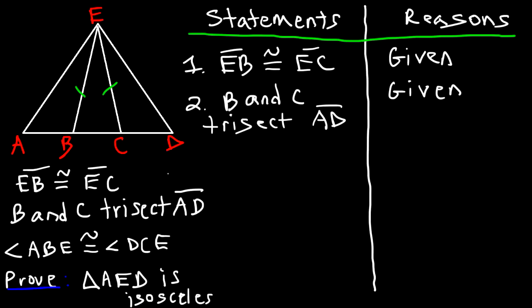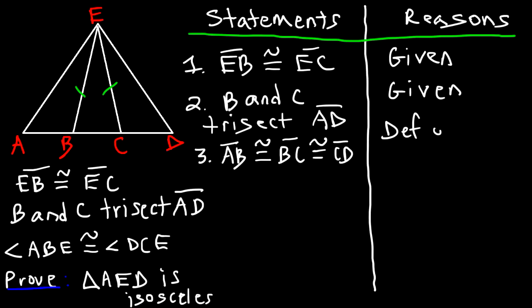If points B and C trisect segment AD, what does that mean? A segment bisector splits a segment into two congruent parts; two points that trisect a segment split it into three congruent parts. So AB is congruent to BC, and BC is congruent to CD — all three parts are congruent. The reason: definition of a segment trisector.